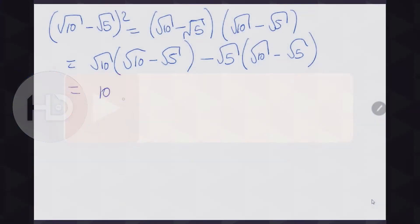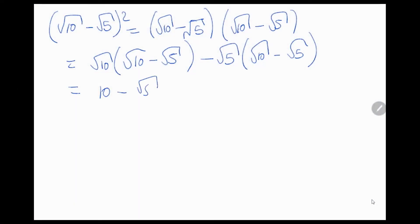Square root of 10 times square root of 10 is 10. Square root of 10 times square root of 5 is square root of 50. And square root of 5 times square root of 10 is square root of 50. And square root of 5 times square root of 5 is 5. So we have 10 minus square root of 50 minus square root of 50 plus 5,